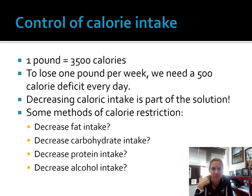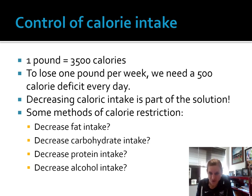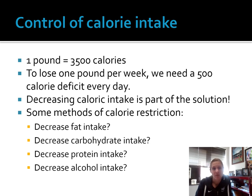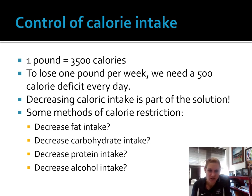When we think about making behavior modifications, it's important to consider all the different options we could incorporate into a plan. One of these plans is certainly restriction of calories. In order for us to lose one pound, we have to create a calorie deficit of 3,500 — that can be a combination of both nutritional changes and calorie expenditure. Some different methods include decreasing fat intake, carb intake, protein intake, or alcohol intake.